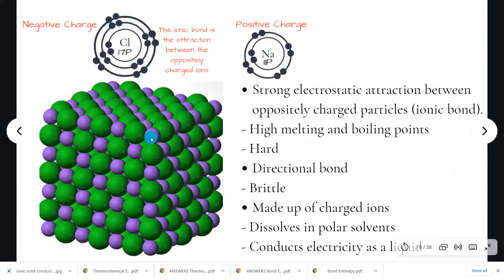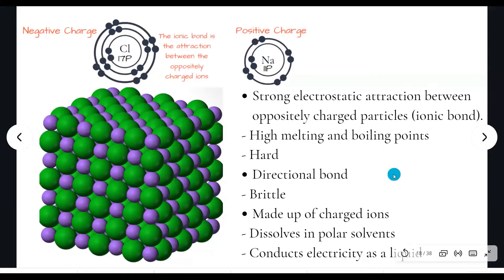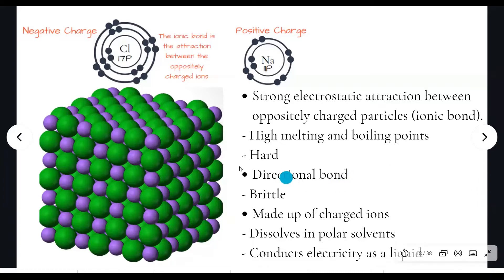In an ionic solid the structure extends in three directions, forming a 3D lattice — a regular pattern of ions that extends in three directions. The ionic formula of an ionic compound tells you the ratio of cations to anions. For example, the ionic formula for sodium chloride is NaCl, which doesn't mean one sodium and one chloride ion, but rather that for every one sodium there is one chloride ion.